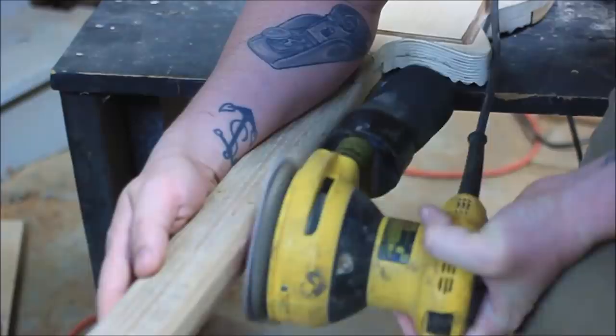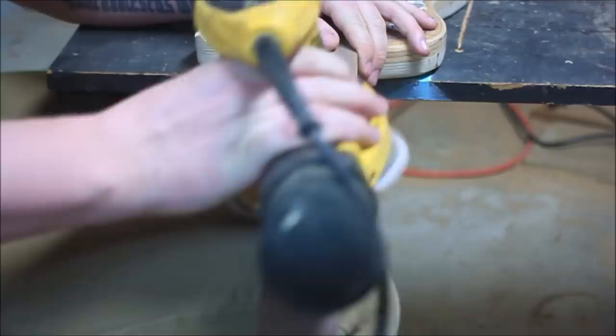So instead of trying to push this whole guitar through a saw, I just took some 80 grit sandpaper on the random orbit and flushed up the fretboard to the neck, also using it to add the fretboard's radius.